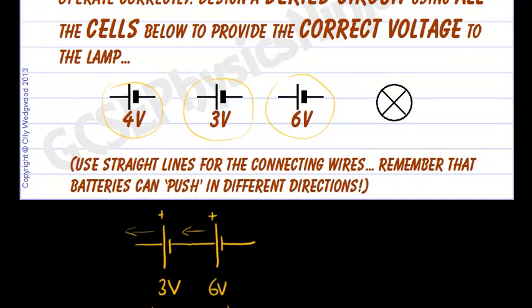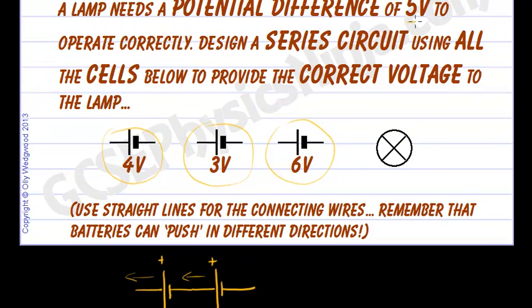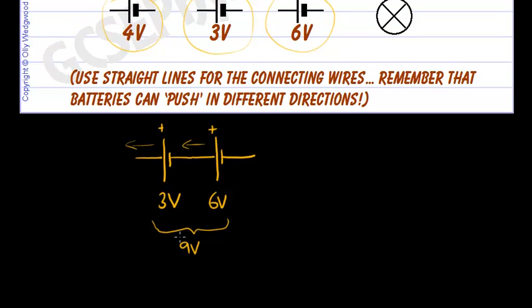But we haven't yet reached 5 volts; in fact, we've gone over 5 volts. So what can we do to reduce this 9 volts down to 5 volts?